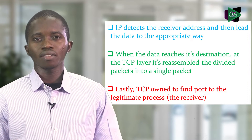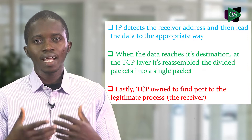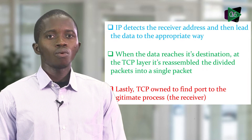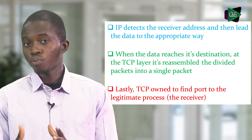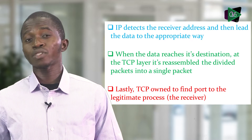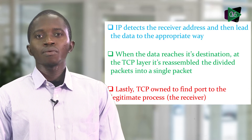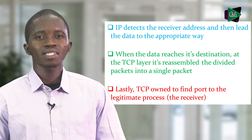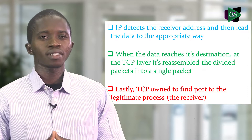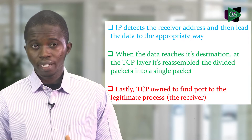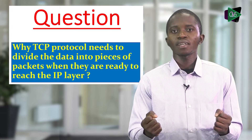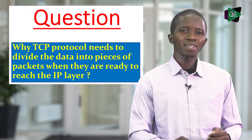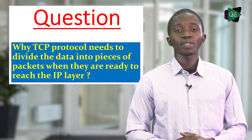When data reaches its destination, the TCP receiver must collect and gather all packets. After that, it delivers to the receiver application via its port and then makes a deposit. That's why TCP protocol is very necessary — it is an asset for data processing on the network domain. Now I have a question for you: Why does TCP protocol need to divide the data into pieces or packets when they are ready to reach the IP layer?